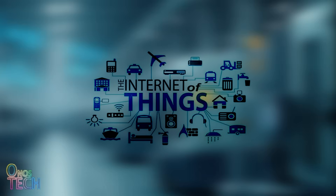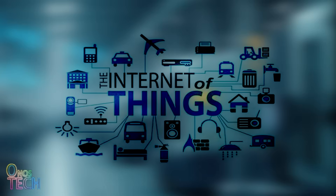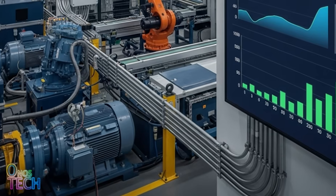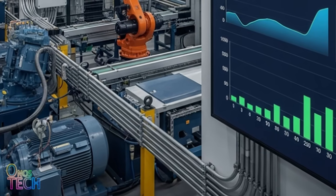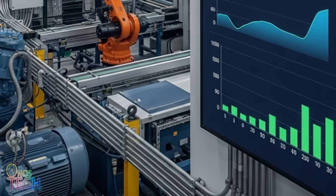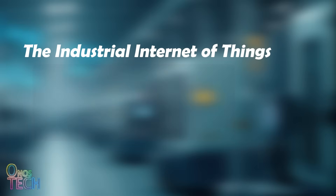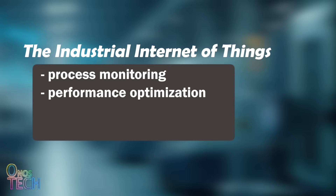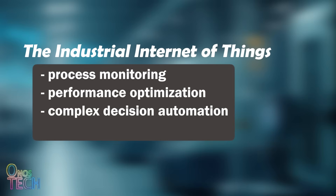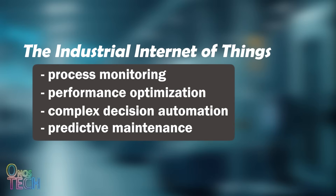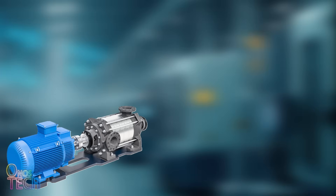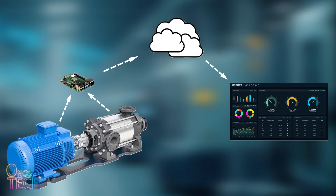The IIoT takes IoT technology — sensors, data, and the cloud — and applies it to industrial environments where there are machines, transmitters, actuators, controllers, and the SCADA system at large. IIoT intelligently monitors processes, optimizes performance, automates complex decisions, predicts failures before they happen, and automatically triggers maintenance. For example, vibration and temperature sensors on a pump stream data through a gateway for analysis and trigger maintenance automatically. This is one of the most common IIoT applications: predictive maintenance.